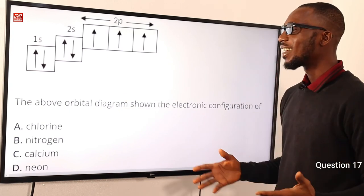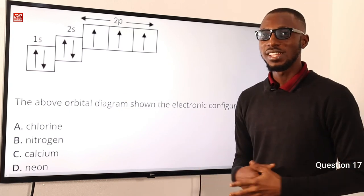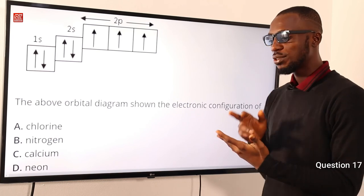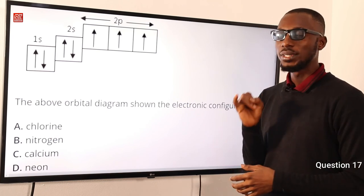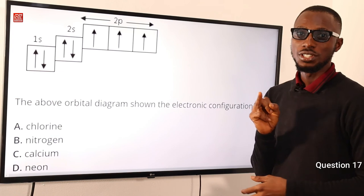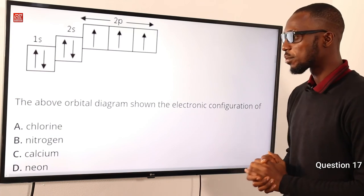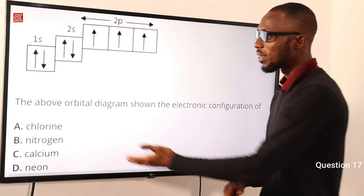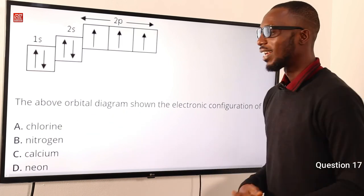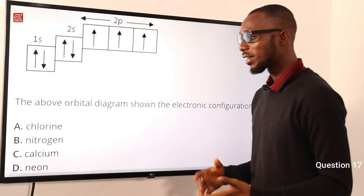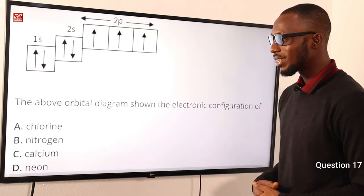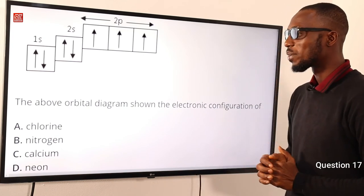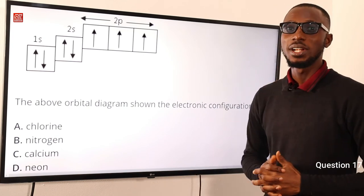What element has atomic number 7? That is nitrogen. Going from hydrogen, helium, lithium, beryllium, boron, carbon — nitrogen is 7. Chlorine has atomic number 17, calcium has 20, and neon has 10. The correct option is option B for nitrogen.